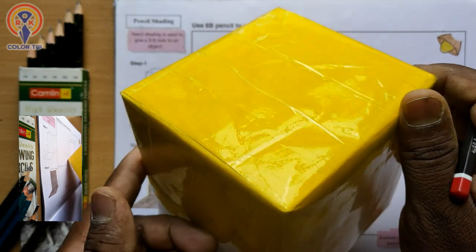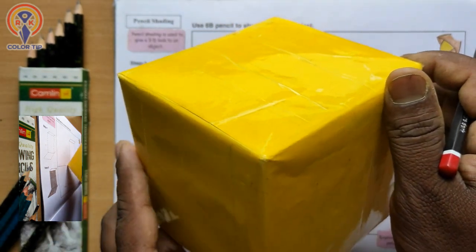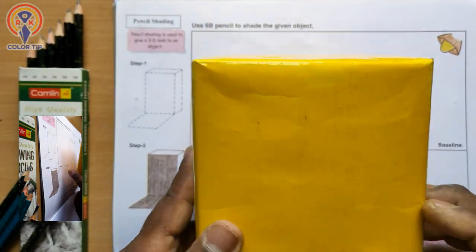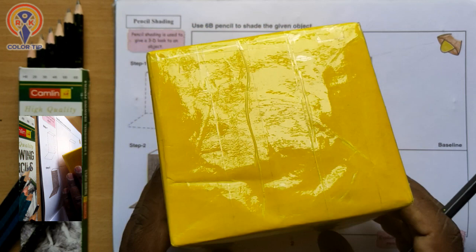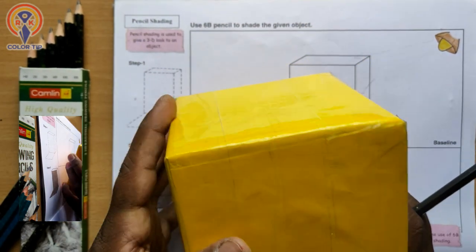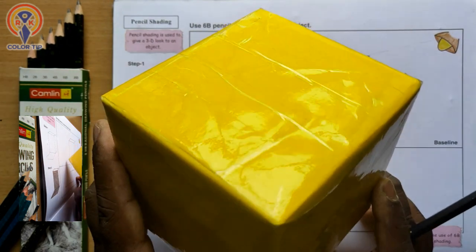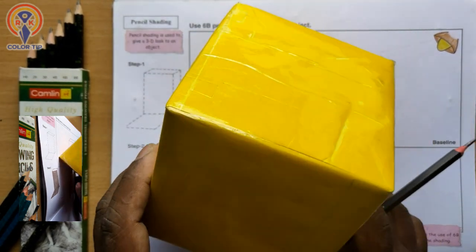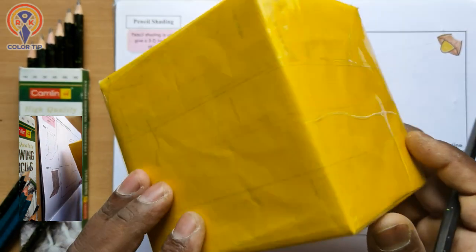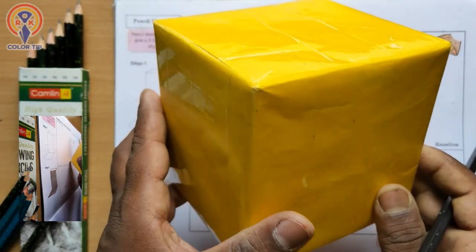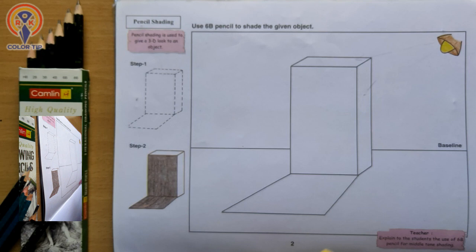If I turn it towards the light source, now it became the bright one and these two faces became dark. So in everyday life, we have to observe how the light source is reaching the objects and how the shades are forming. Whether it's bright light or dark, everything needs to be observed to do well with our drawing. Let's go on with shading.